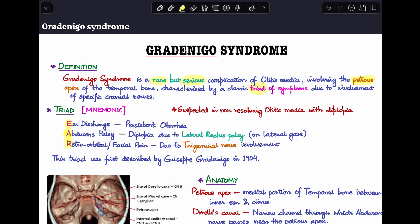How do we remember this triad? To make it easy, I have a mnemonic for you. The mnemonic is EAR. E is for ear discharge, so you see persistent otorrhea. A is for abducens palsy which leads to diplopia because of the lateral rectus palsy, only visible on lateral gaze. R is for retro-orbital pain or facial pain, which happens because of trigeminal nerve involvement. These are the three features forming the triad of Gradenigo's syndrome.